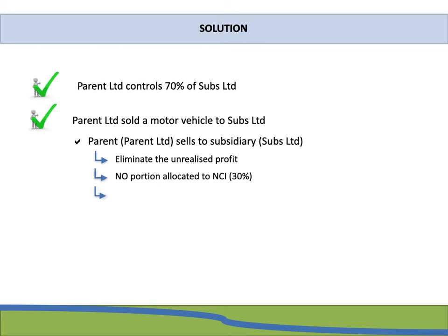A motor vehicle is a depreciable item of property, plant and equipment, which means we need to adjust the depreciation. The gain made from the sale of this motor vehicle to the subsidiary is going to be realized through the use of the motor vehicle. To realize that gain through use, we need to adjust depreciation every year until that gain is completely eliminated.